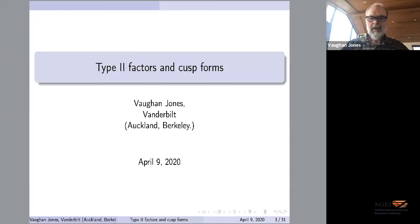Welcome everyone to our MSRI online seminars. If you were here for the conferences, the seminars work a little bit differently — you have the power to unmute yourself. So keep it muted when you're not asking a question, but when you want to ask a question, you can just unmute yourself and jump in. This week we're very happy to have Vaughan Jones of Vanderbilt, currently in Bodega Bay, telling us about two-one factors and cusp forms.